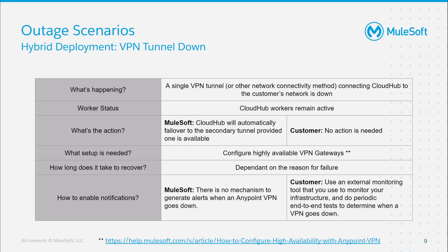In this scenario, we have a single VPN tunnel go down, but the actual CloudHub application is still running. Assuming the customer has set up their gateways in a highly available configuration, the secondary gateway will be used in the event of a primary gateway failure. If the gateways are properly set up, MuleSoft will automatically redirect traffic to the secondary gateway, ensuring zero downtime. When it comes to recovery of the primary gateway, the time to recover is very dependent on the reason it failed — this can range from seconds if managed by Border Gateway Protocol (BGP), all the way up to minutes if managed by custom scripting.